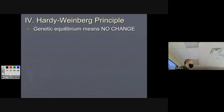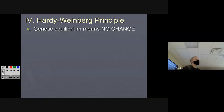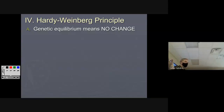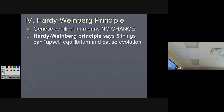What they basically said is: every population we see is evolving — what would it take for them not to? Mutations are always going to happen. So they asked, what would we have to take away from populations for them not to change? This gives us the five things you need to learn that upset equilibrium — the five things that cause evolution.